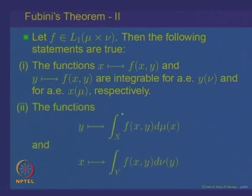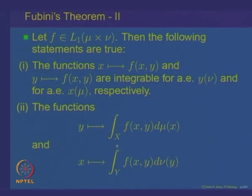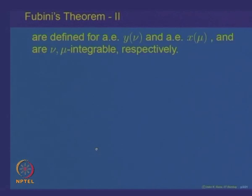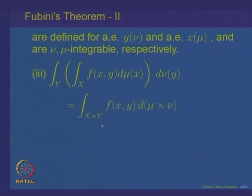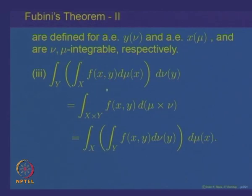So when you fix one variable at a time, for almost all such fixings the function of the other variable is integrable. You can then integrate out, giving the function y going to the integral over X of f(x,y) d-mu(x) and similarly x going to the integral over Y of f(x,y) d-nu(y). The claim is that these two functions are again integrable with respect to the corresponding measures nu and mu. You can integrate them out, and the iterated integrals are equal and equal to the integral of the function with respect to the product measure whenever f is an integrable function.